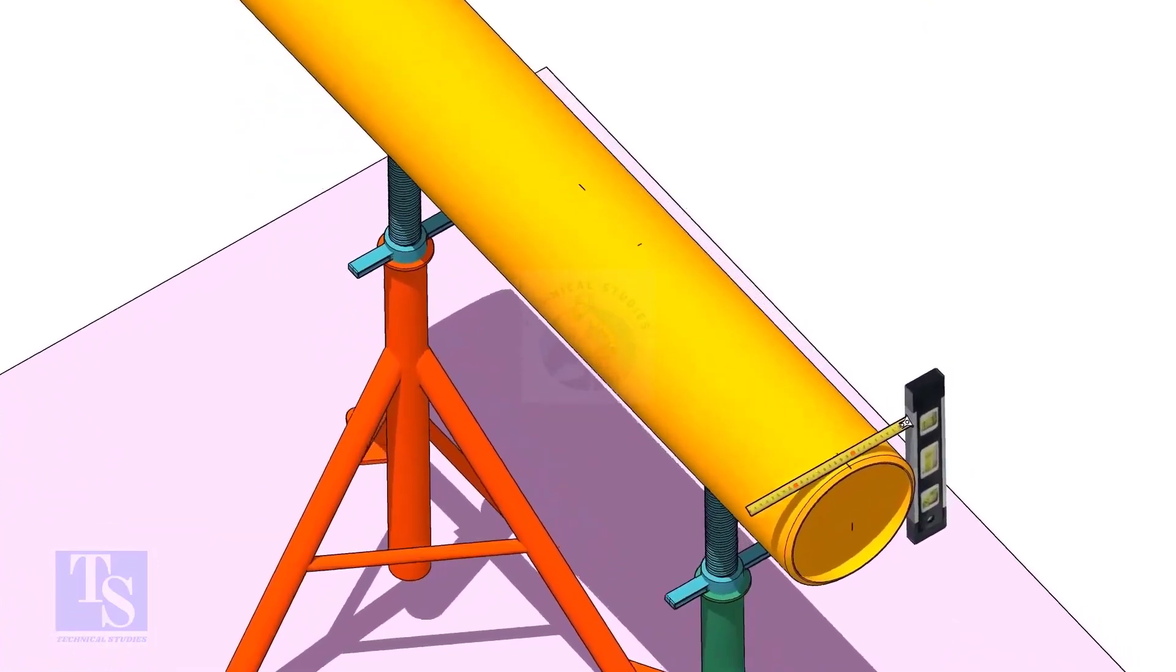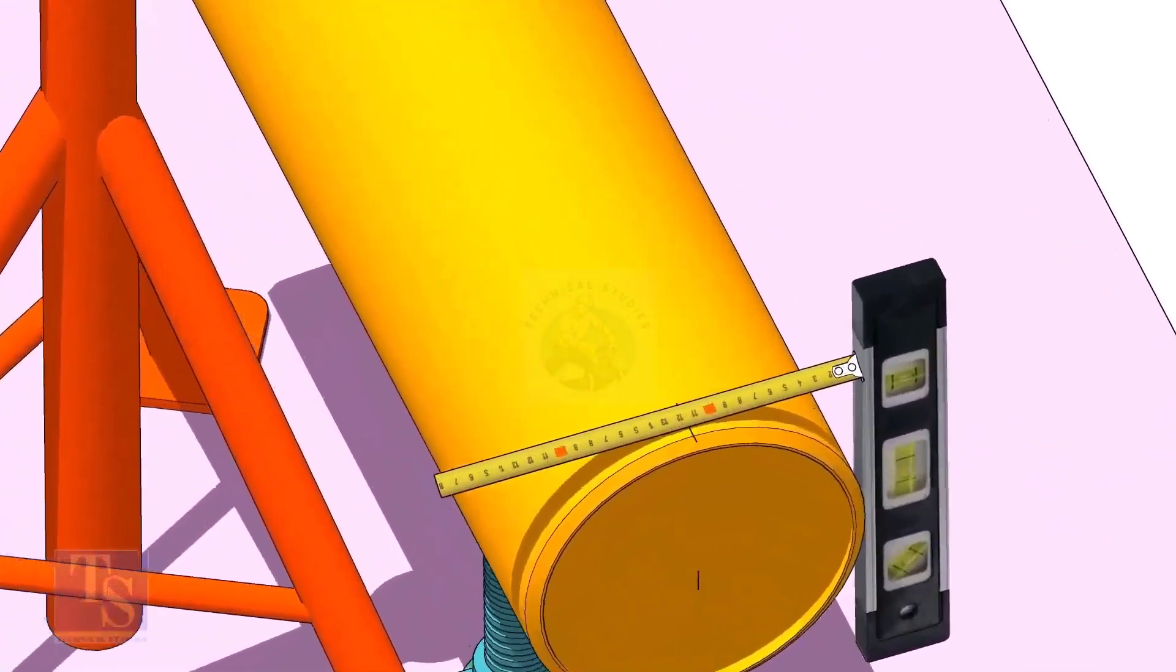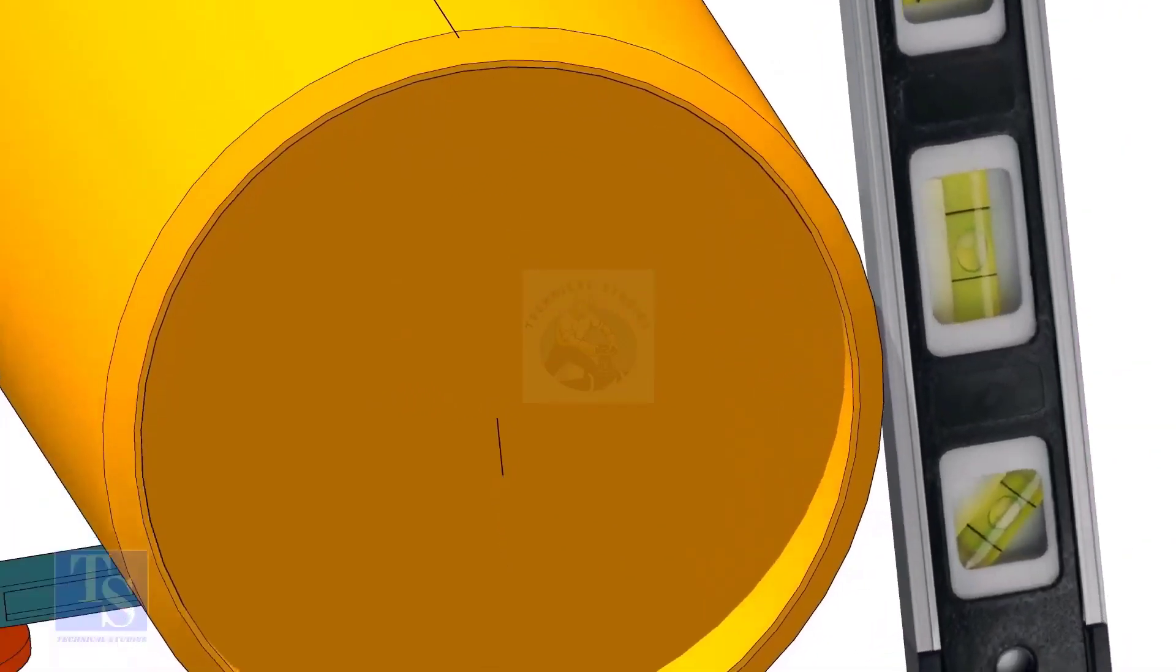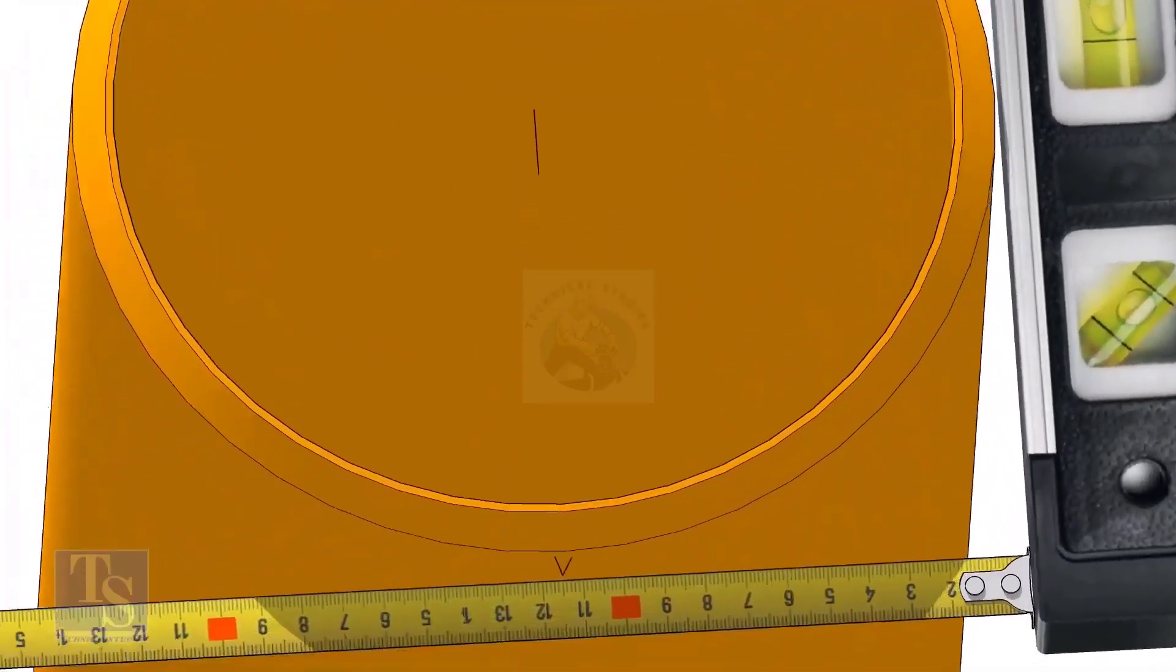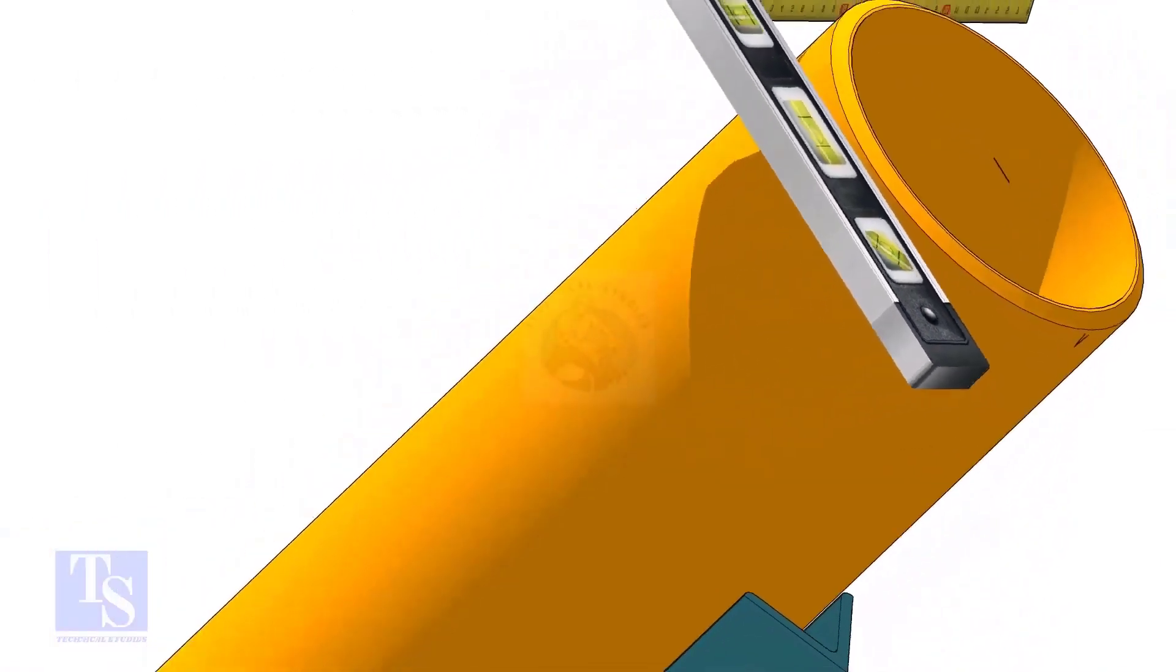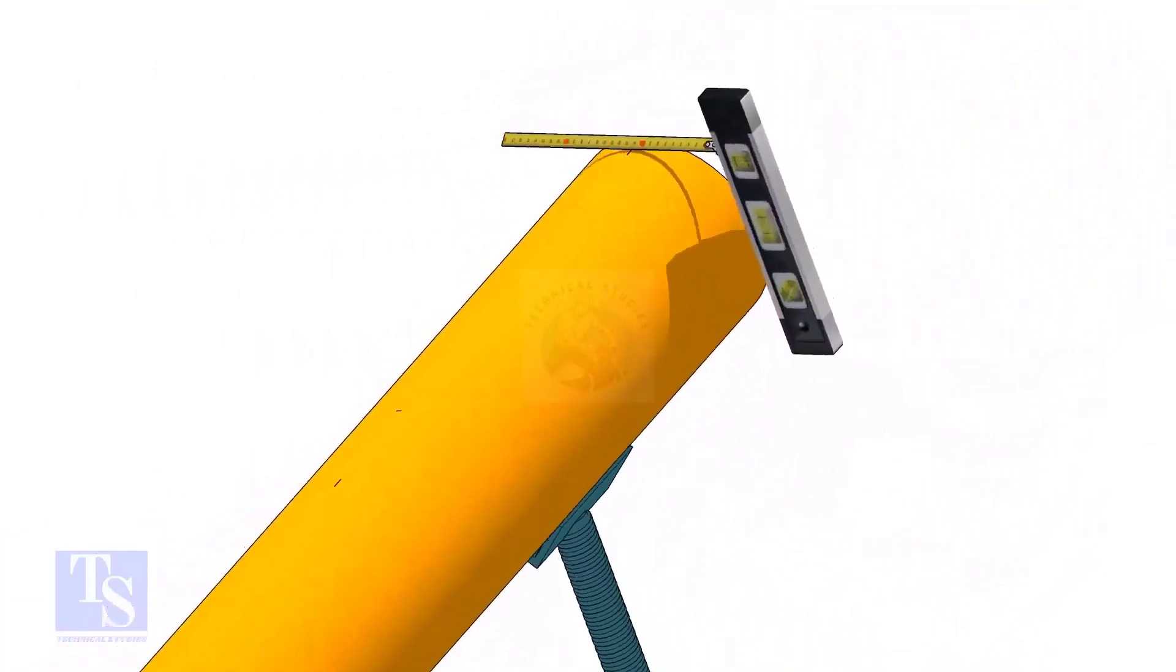Mark the center line of the header on the top and the bottom. Hold a level bottle firmly and vertical at the side of the pipe as shown, mark half OD at the top and the bottom side of the pipe. Cross check the dimension from the opposite side to ensure the marking is correct.